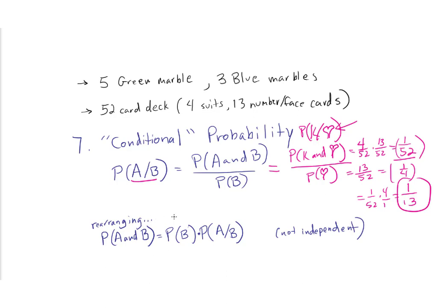If we rearrange this, the probability of A and B in general equals the probability of B times the probability of A given B. Before, we said P(A and B) is the product of P(A) times P(B), but that was under the restriction of independent events. More generally, the calculation is P(B) times P(A|B). We're most likely to see this in tables on the exam.